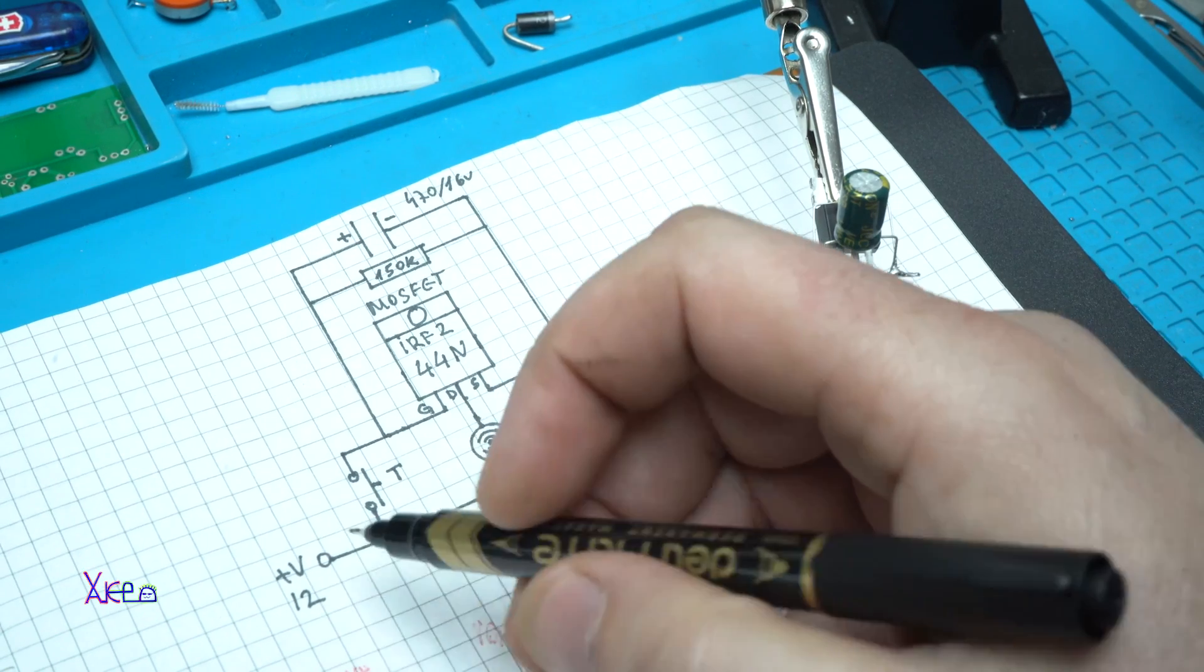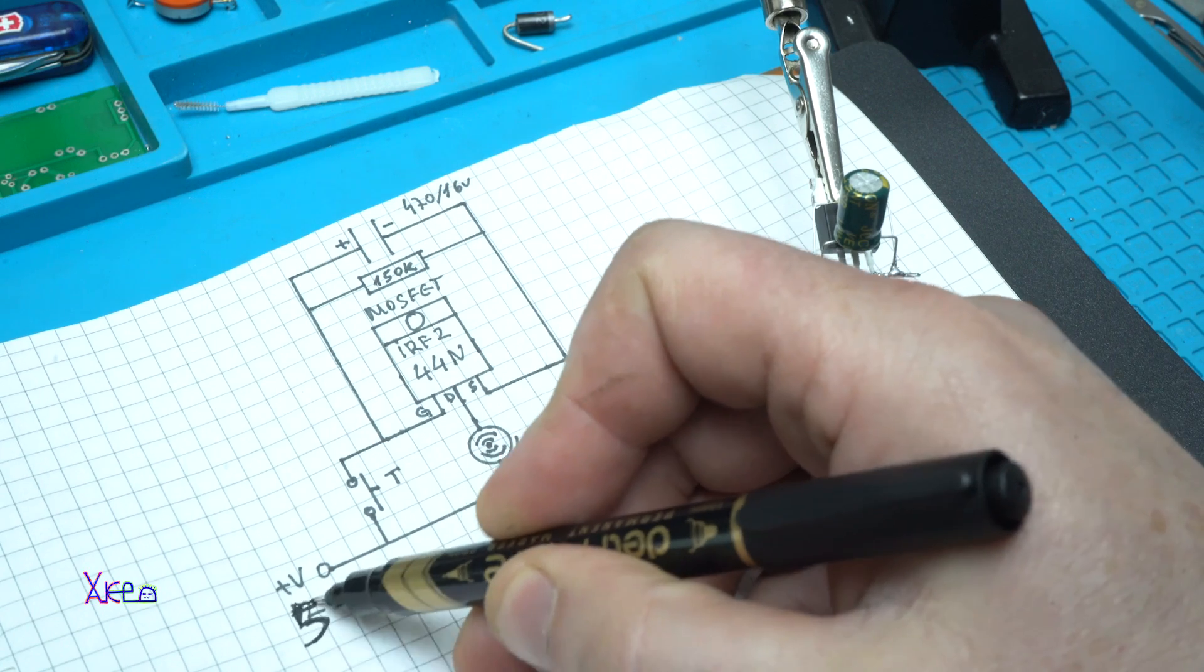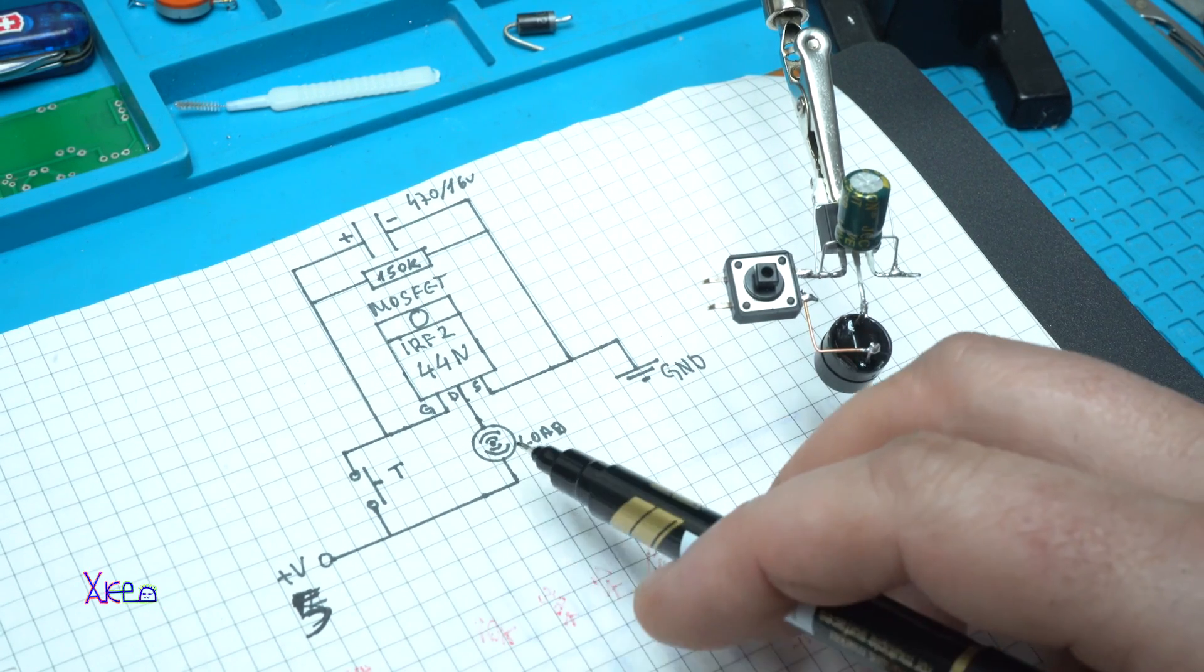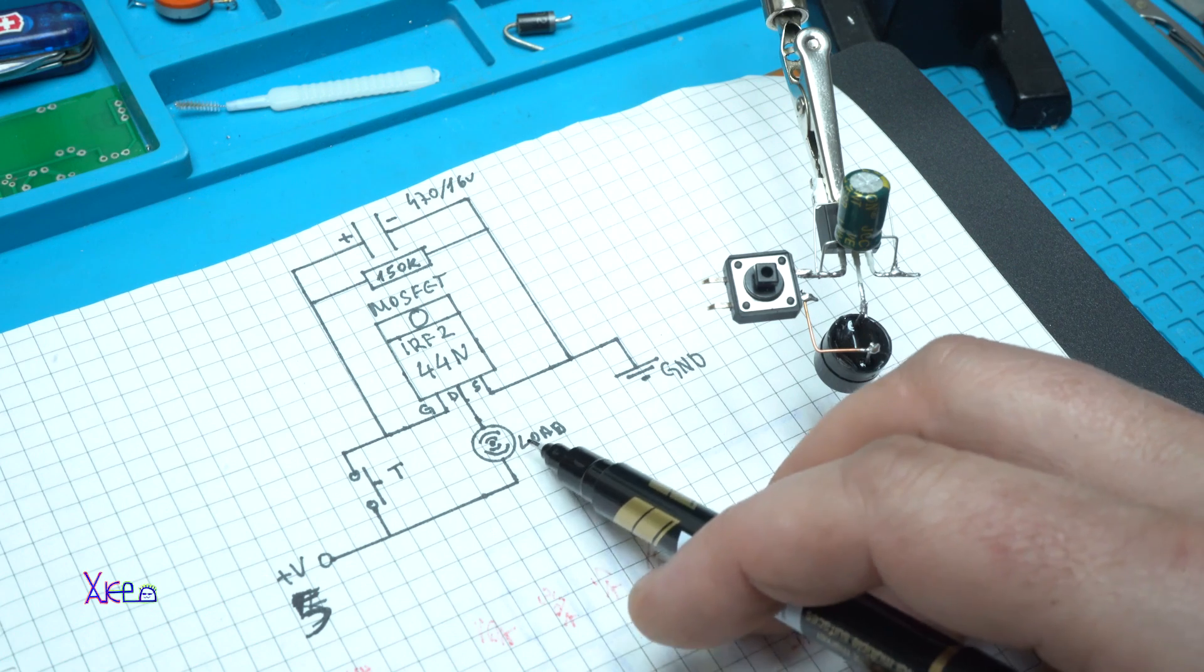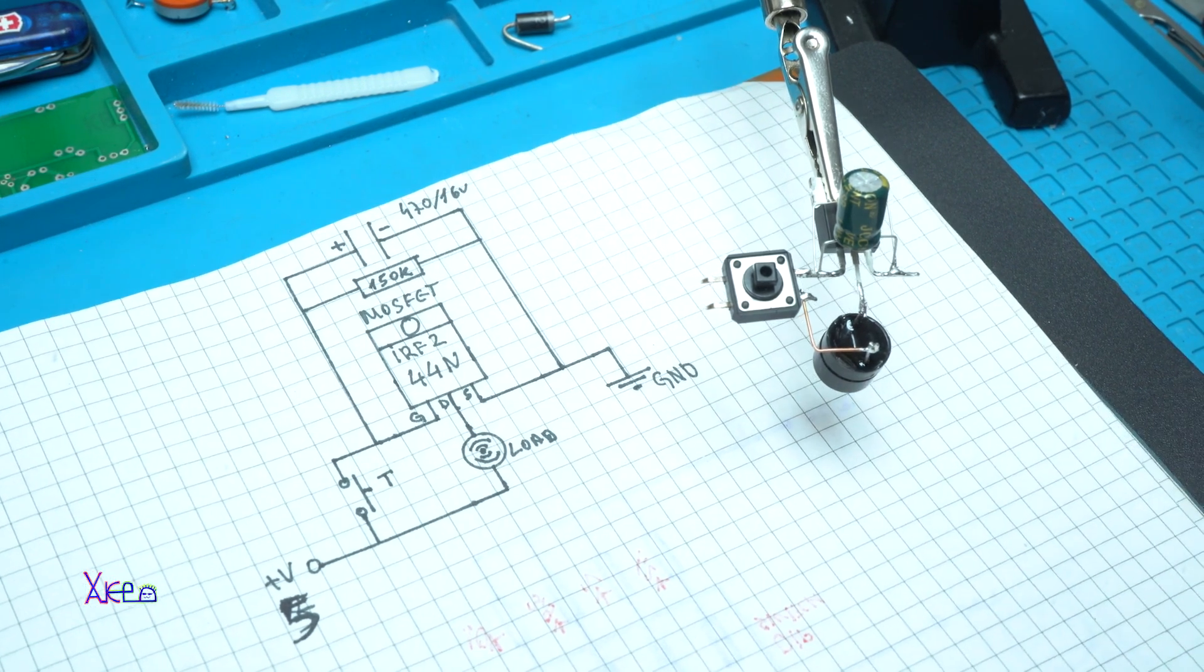Sorry, the circuit works on 5 volts but can work on 12 volts if you use another load, for example a valve. But in this case I'm using a 5 volt active buzzer.